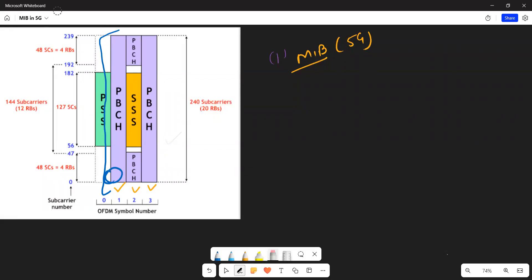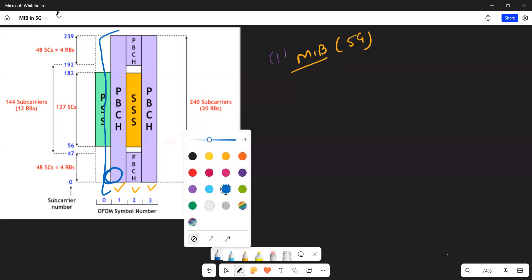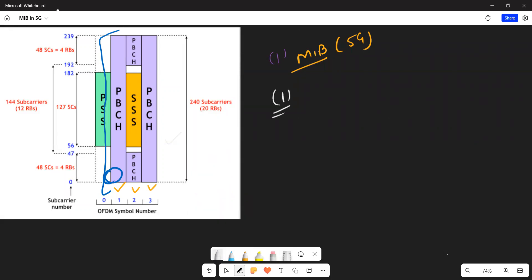Hi everyone, welcome to the channel again. Today we'll be discussing the 5G MIB Master Information Block and its characteristics. If we compare 4G and 5G, both are kind of similar but there are certain differences in terms of periodicity that we'll take a look at.